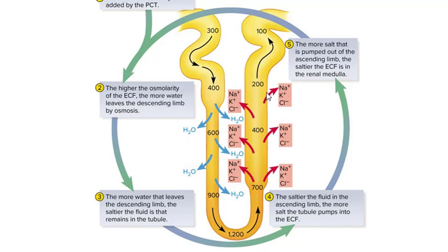The fluid inside matches the fluid outside, so we know the medulla is about 1200 and so is the fluid inside the loop of Henle at its deepest. Coming back up, salt, potassium, and chlorine are pumped out, losing milliosmoles, so you pump from 1200 back up to 100 milliosmoles by the time you reach the distal convoluted tubule. When teaching in person, once students realize how concentrated the fluid gets and how likely kidney stones can form, they often get up to drink water.